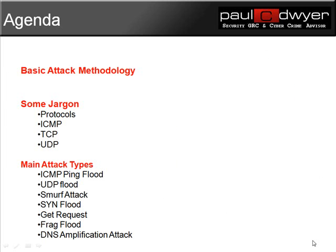Firstly, we look at a basic attack methodology. Then we'll revise some basic jargon that we need to go over in order to explain how these attacks work. Then I'll look at some of the main attack vectors or attack types from ICMP Ping Flood, UDP Flood, Smurf Attack, SYN Flood, GET Request, FRAG Flood, and finally a DNS Amplification Attack.